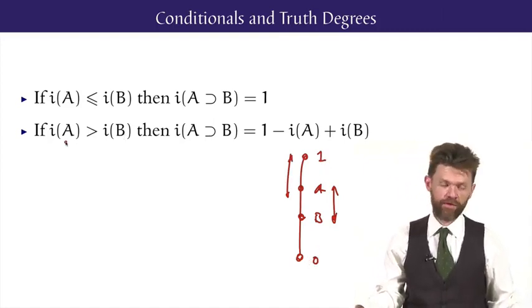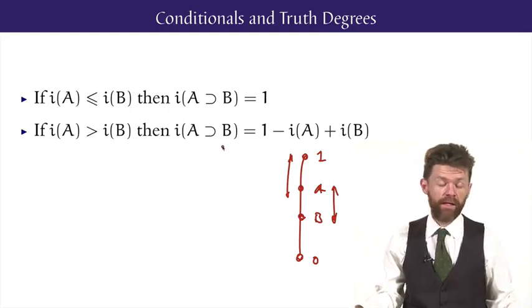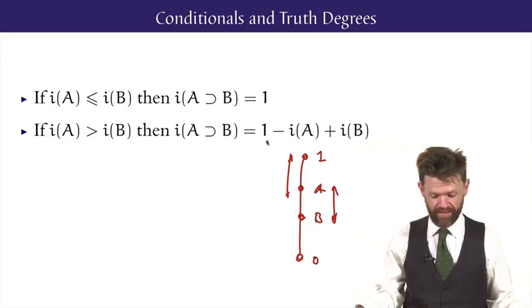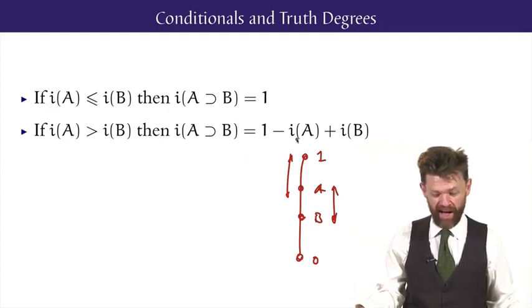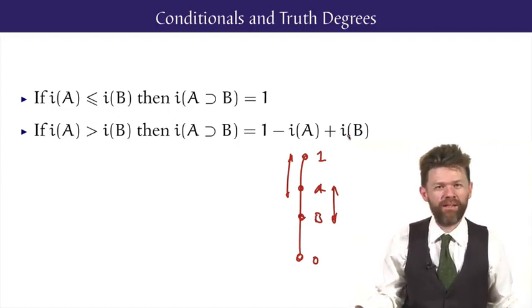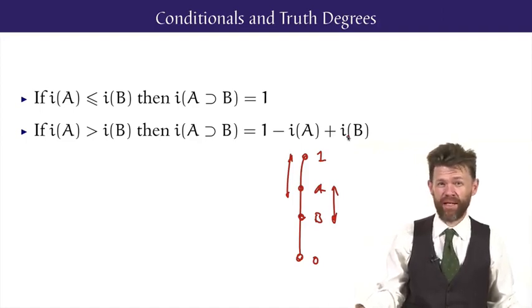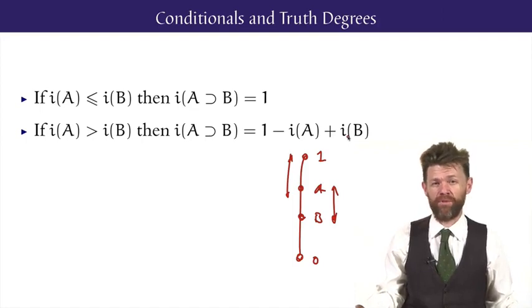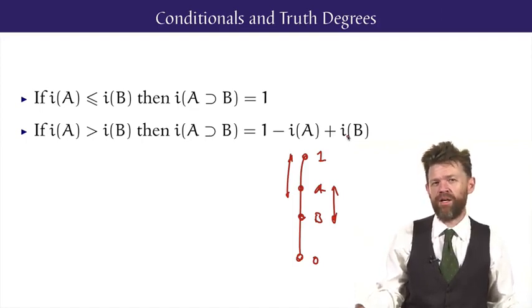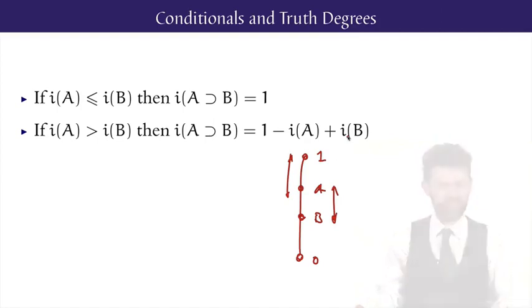So the rule for this is that if the interpretation of the antecedent is above the interpretation of the consequent, then the whole conditional gets one, and then you drop the value of A below one, and then you add back the value of B, and that gives this interpretation. So if you check these rules and pay attention to only zero, a half, and one, you'll actually see that you'll get Lukasiewicz's three-valued truth tables back. Now these are the truth tables of Lukasiewicz's infinitely valued logic, where you've got an infinity of truth values shading evenly between truth and falsity.